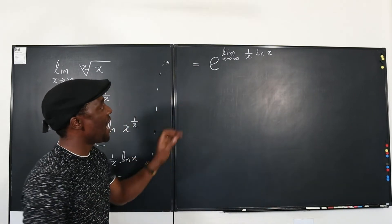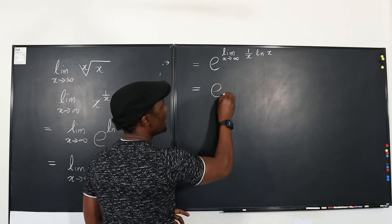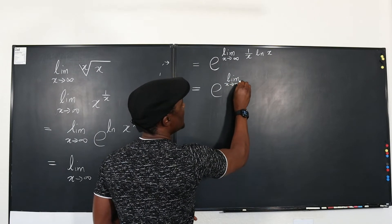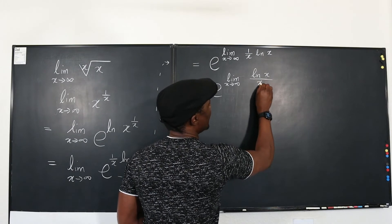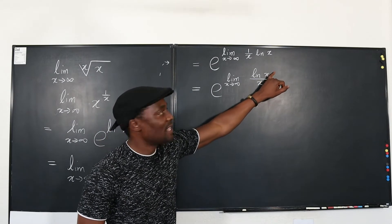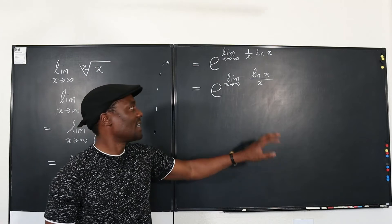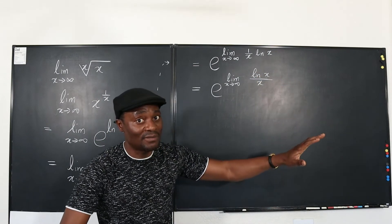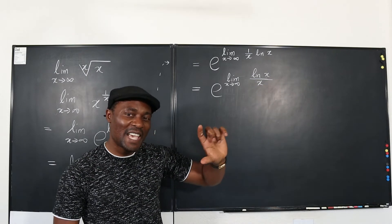So what you're going to do now is simplify this. Take this limit. This is E to the limit as X goes to infinity of the natural log of X divided by X. This is an infinity over infinity case, because as X goes to infinity, ln of X goes to infinity, and X goes to infinity. So L'Hôpital's rule will work here.